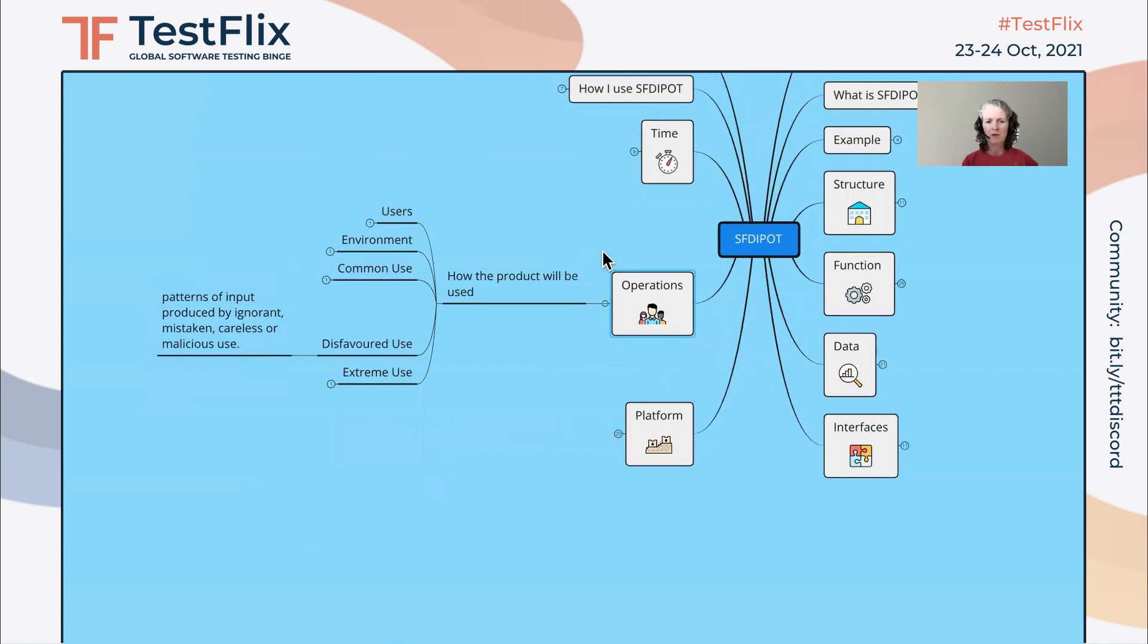Operations is about how the product will be used. So not only about the users, different types of users and different personas and common use cases. We also need to make sure we cover disfavored use. So for example, hackers - are they prevented from uploading malware to the application? Users can make mistakes. Will the application handle this gracefully without crashing?